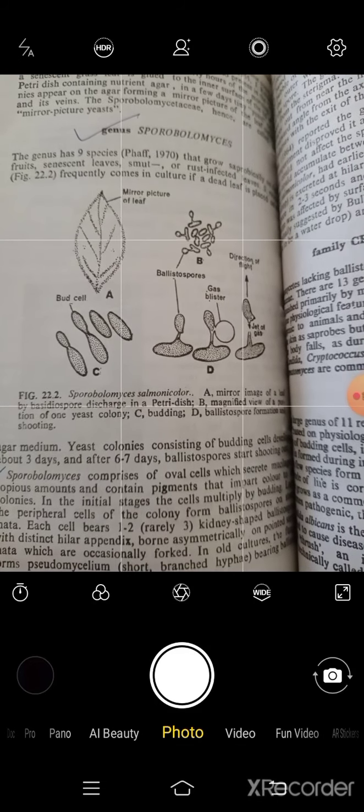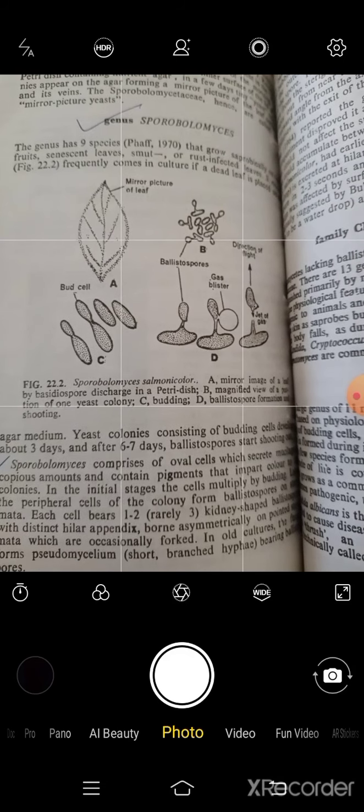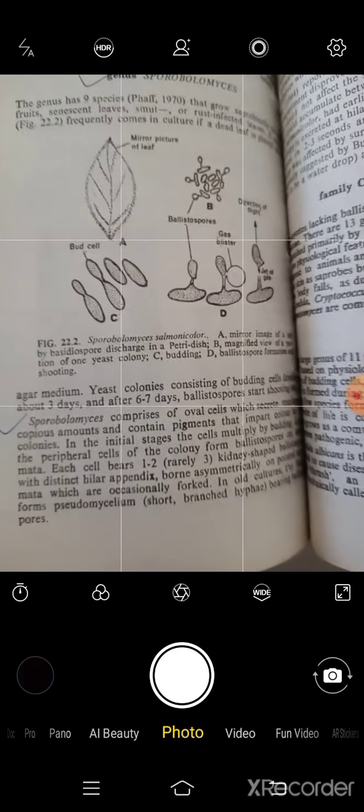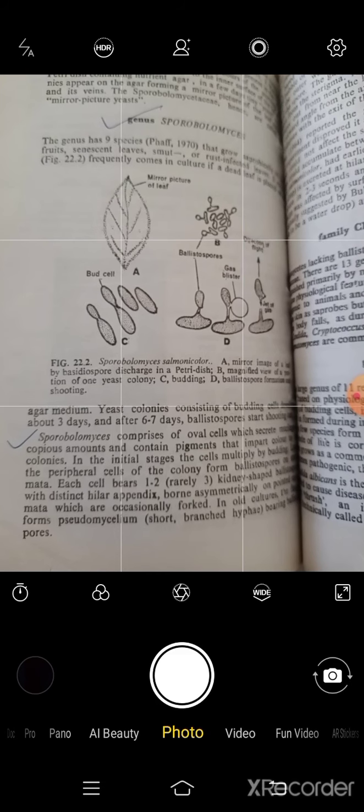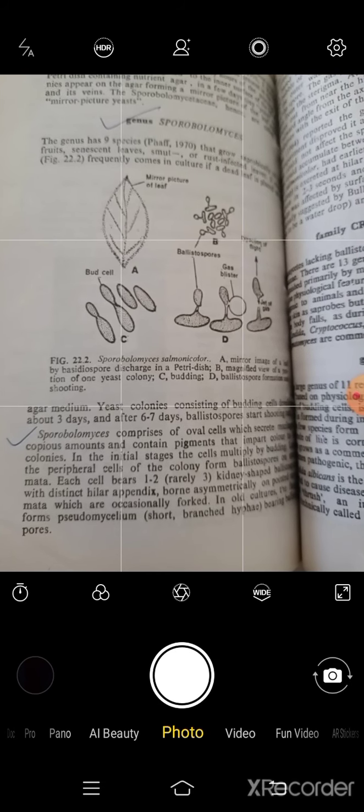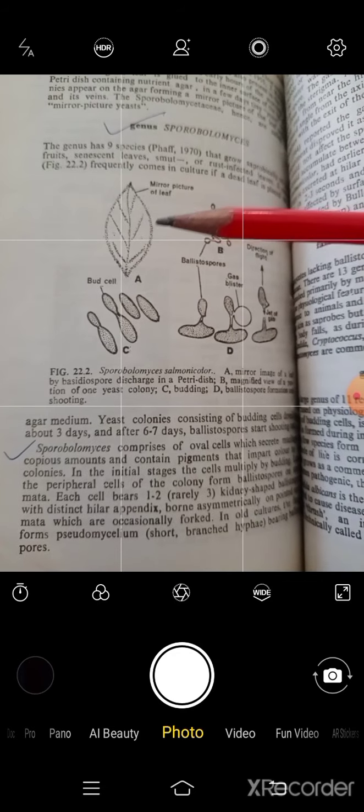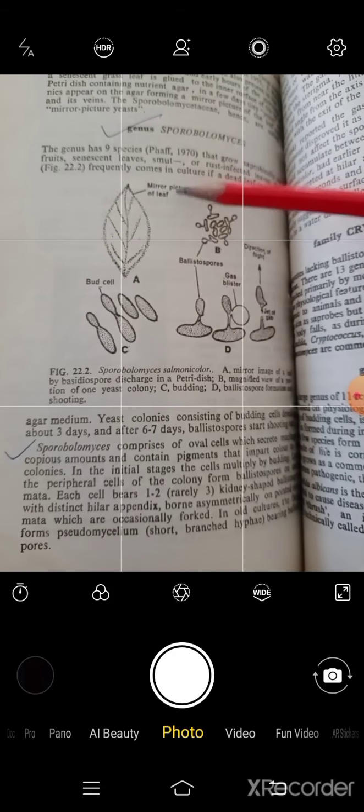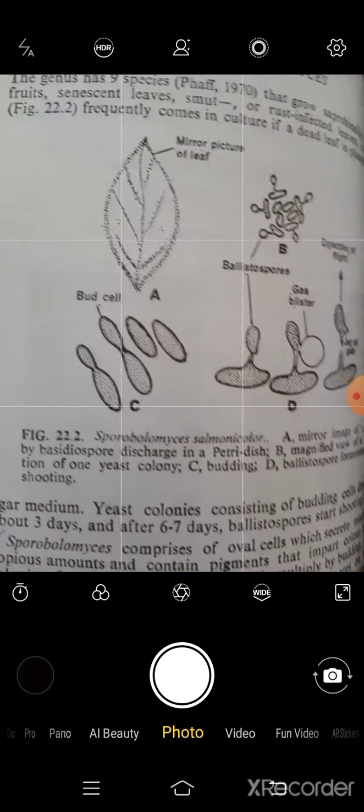And frequently, if we look at colonies, if we say that we have to culture it, otherwise it is not easy to culture sporobolomyces. How we get it cultured? As you can see in the diagram, there is a mirror picture of leaf. What is a mirror picture of leaf?